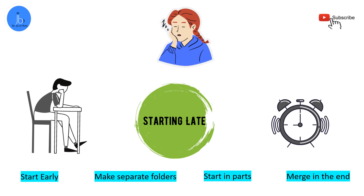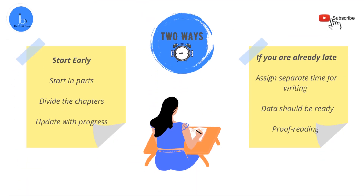The efficient way is to start early and write the thesis part step by step as you progress. Divide your thesis chapter-wise: review of literature, acknowledgement, contents, methods and methodology, references arrangement, results, and discussion. As you progress, start compiling these things. In this way, as you are progressing in your research, you are simultaneously progressing and updating all these folders.